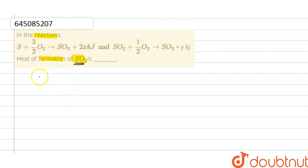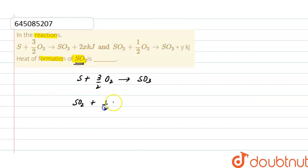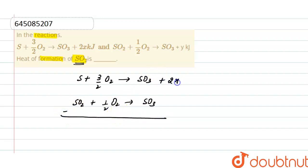The first reaction is S plus 3/2 O₂ gives SO₃, and the second reaction is SO₂ plus half O₂ gives SO₃. Here it is 2x and there is plus y kilojoules. If we subtract both the reactions...